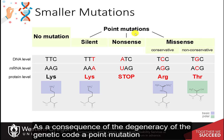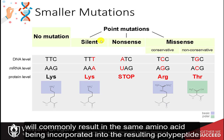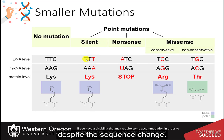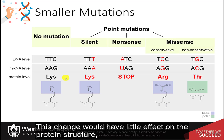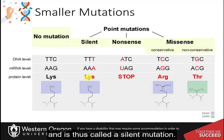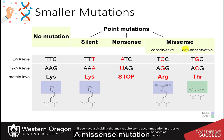As a consequence of the degeneracy of the genetic code, a point mutation will commonly result in the same amino acid being incorporated into the resulting polypeptide, despite the sequence change. This change would have little effect on the protein structure and is thus called a silent mutation.